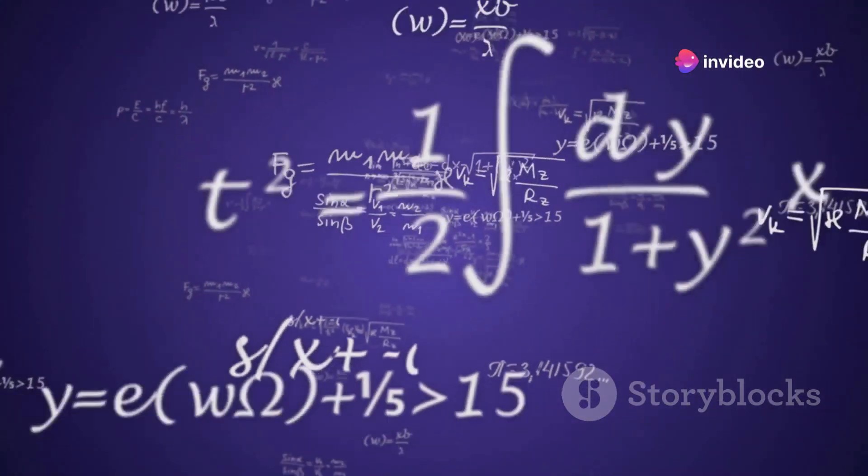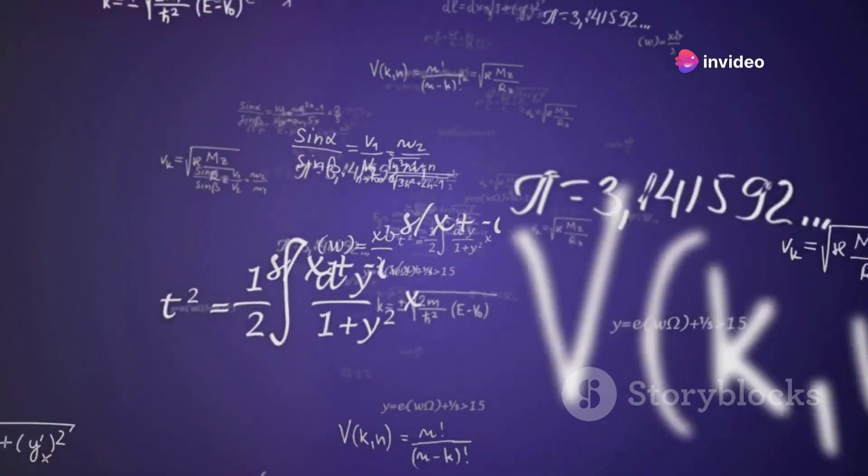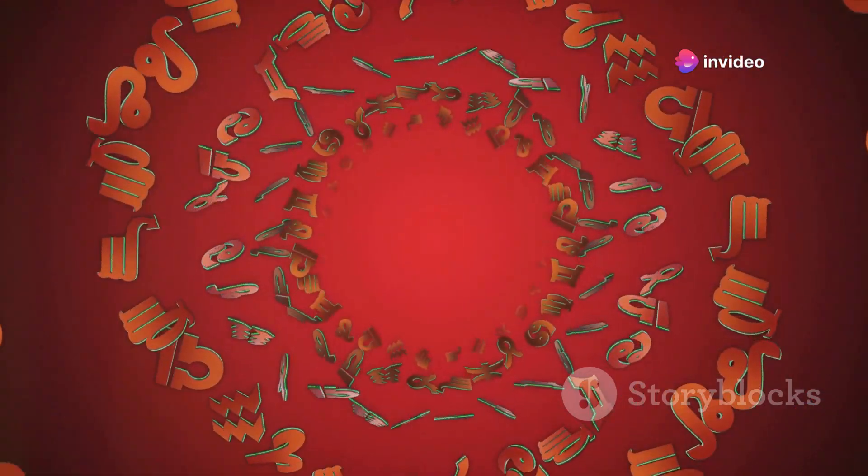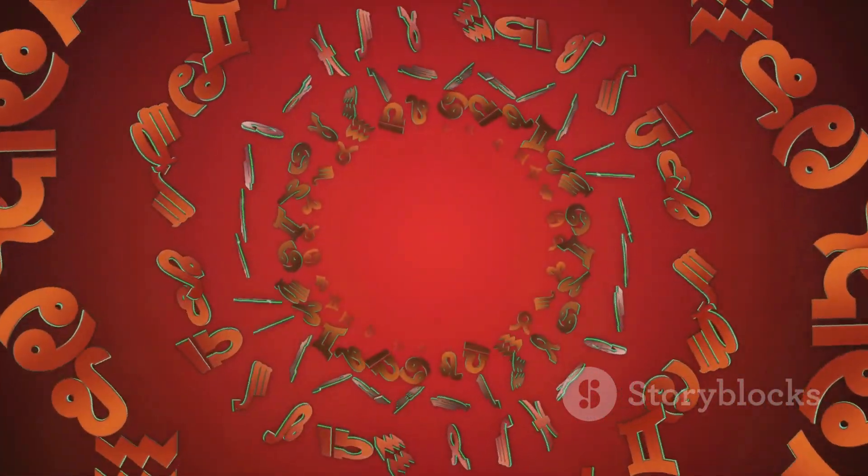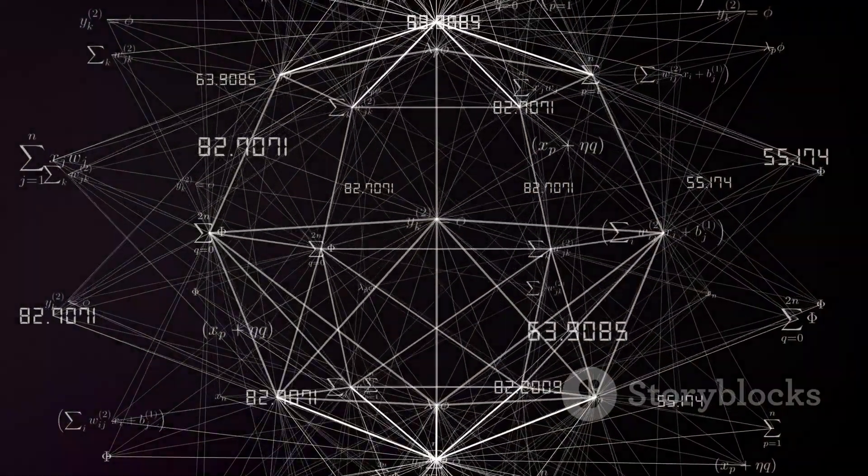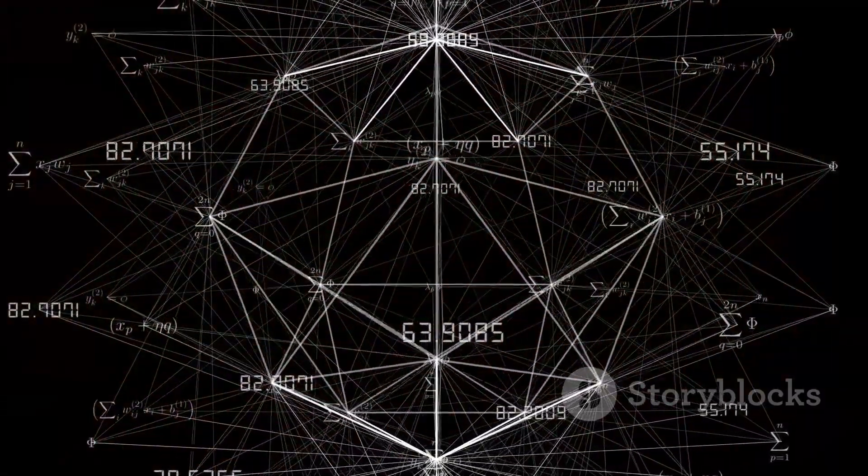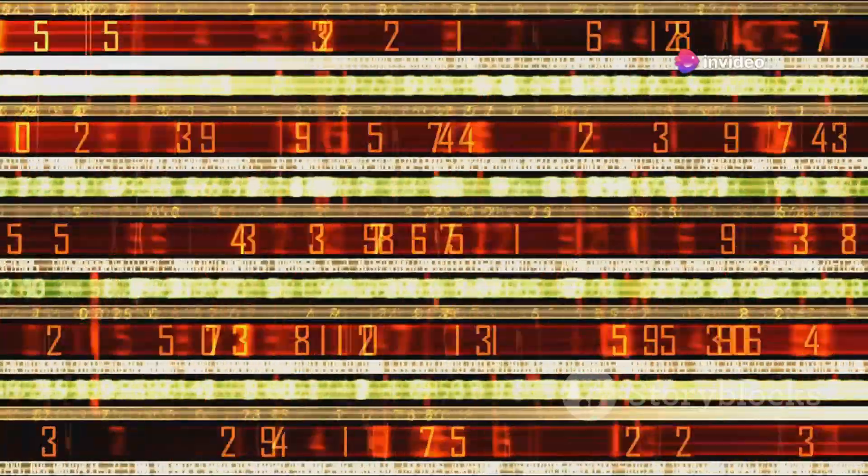In the realm of mathematics, 37 stands out with its unique properties. It is a prime number, divisible only by one and itself. This characteristic makes it a building block of larger numbers, adding to its significance. 37 is also a lucky number, determined by a specific sieve in number theory.